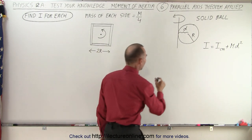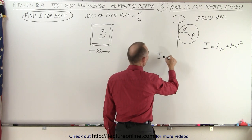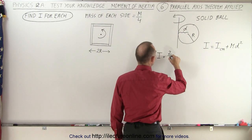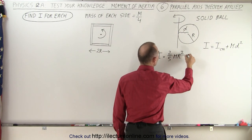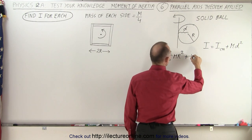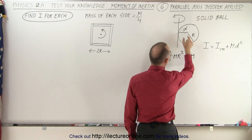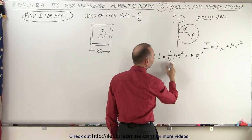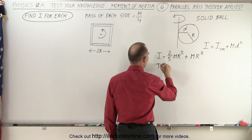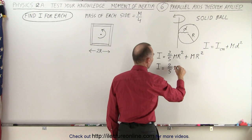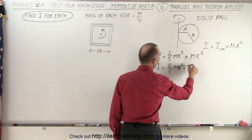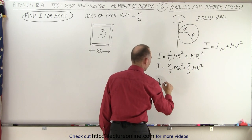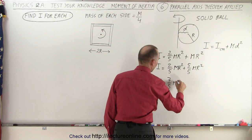For the easier example, I is equal to I of the center of mass of a solid ball rotating about its center of mass — that would be two-fifths m r squared — and we add to that the mass of the ball times the distance squared. The distance is equal to the radius, so we have r squared again. Finding a common denominator: the moment of inertia equals two-fifths m r squared plus five-fifths m r squared. Adding these together, the moment of inertia equals seven-fifths m r squared.